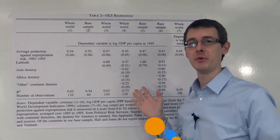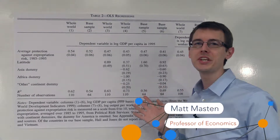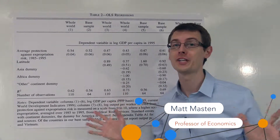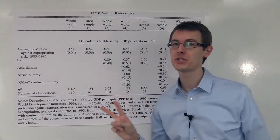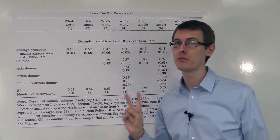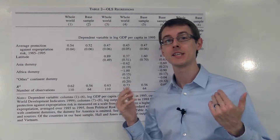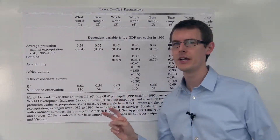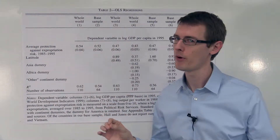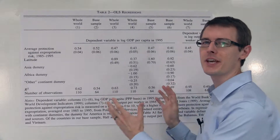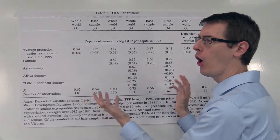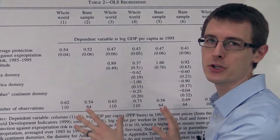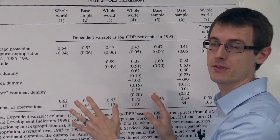Here I've got a regression table. You will see these all the time. It's the second most important table you'll ever see, the first being summary statistics. This table's second most important, still very important though — a regression table. I just want to give you a brief overview of what it looks like, and in a different module I'll explain how to interpret the numbers.